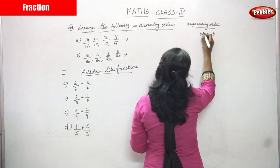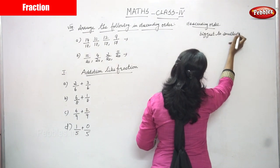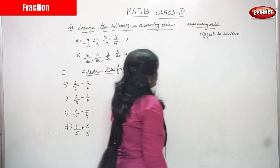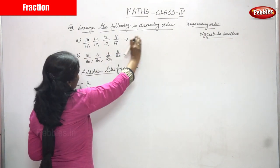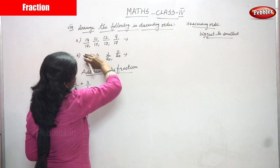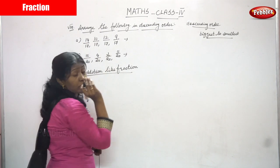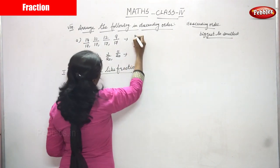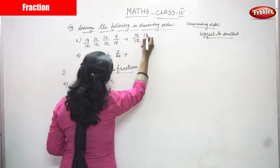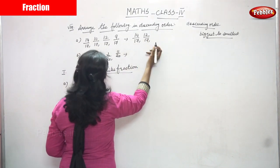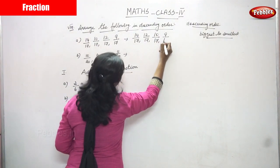Biggest to smallest — this is very important. Don't forget: biggest to smallest. You have to arrange in descending order, so biggest number to smallest number. Look at only the numerators. So 14 by 17 comes first, next 12 by 17, next 10 by 17, next 9 by 17.